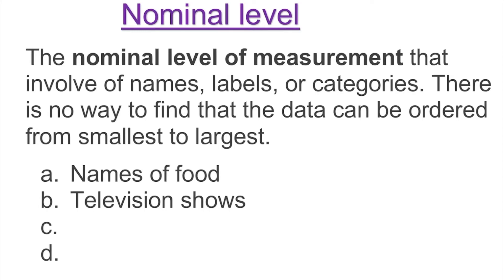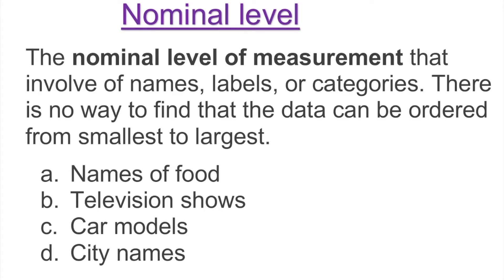Television shows — you have a bunch of them on Netflix and other platforms, and those show names are just names. Car models: almost every manufacturer has different models, and those are just names. City names — for example, New York City, Boston, Los Angeles — those are also just nominal data.